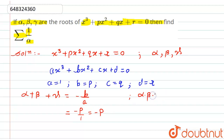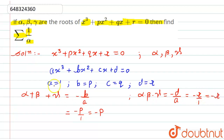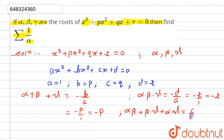Similarly, the product of roots alpha × beta × gamma equals minus d divided by a, which equals minus r. And the sum of products of pairs — alpha·beta + beta·gamma + gamma·alpha — equals c divided by a, which is q.